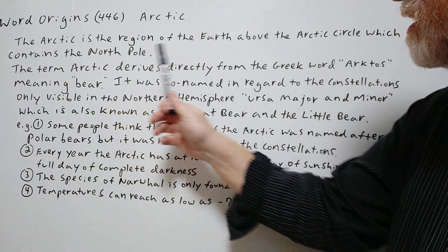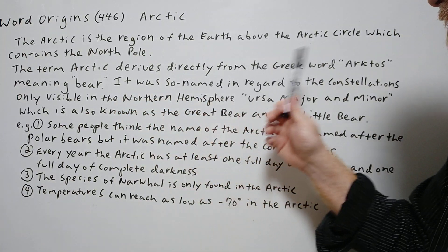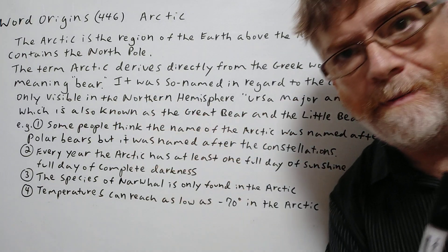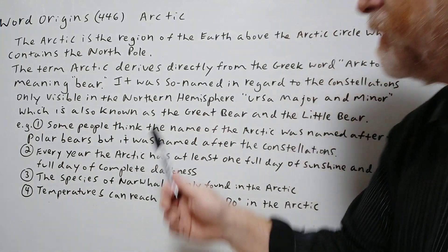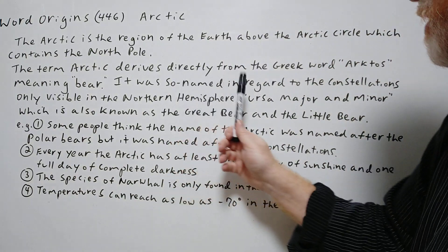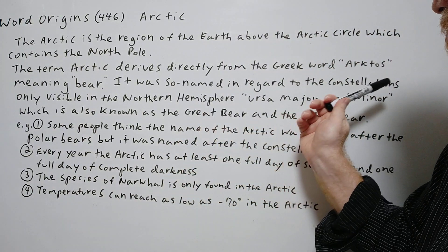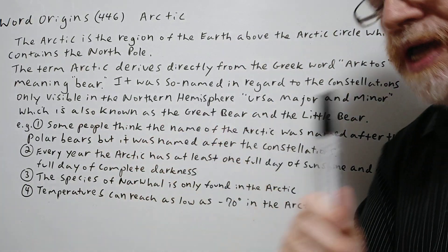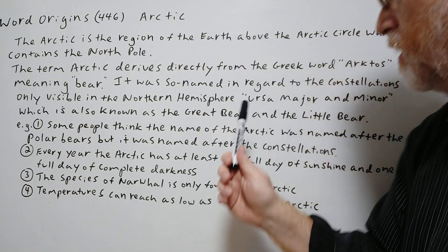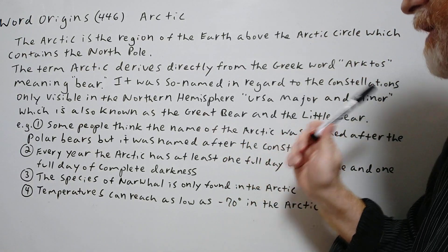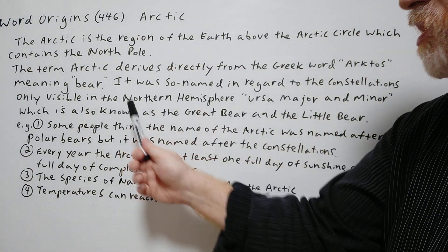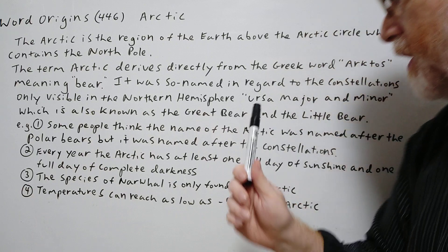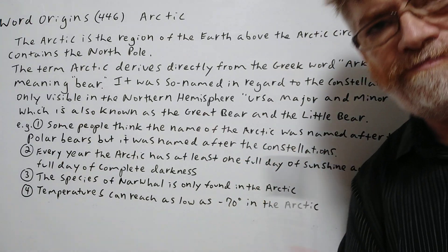The term Arctic derives directly from the Greek word 'Arctos' meaning bear. It was so named in regard to the constellations only visible in the Northern Hemisphere — Ursa Major and Minor, which are also known as the Great Bear and the Little Bear.